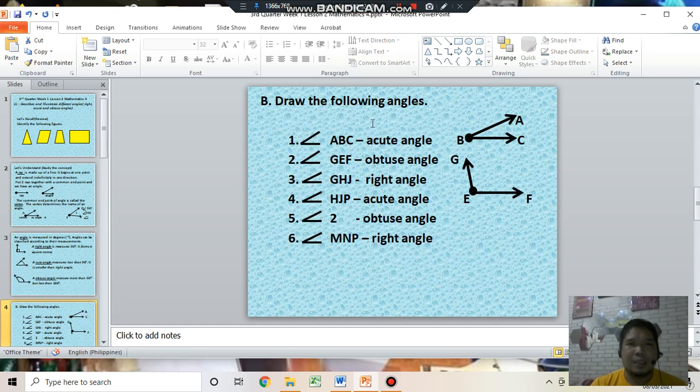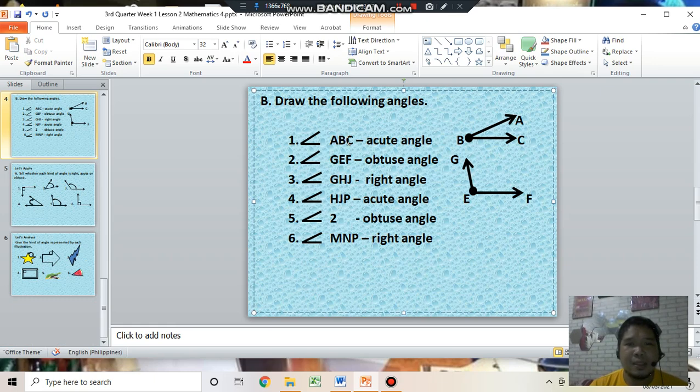Letter B. Draw the following angles. I will answer this first question. Angle A, B, C is an acute angle. To draw this illustration: angle A, B, C. Number 2.